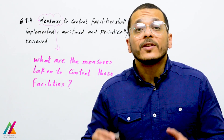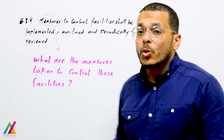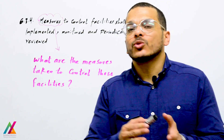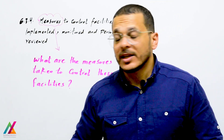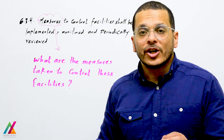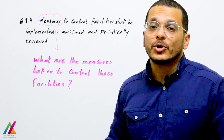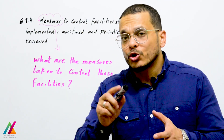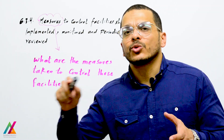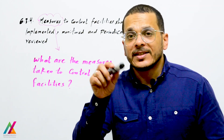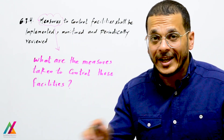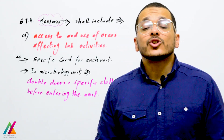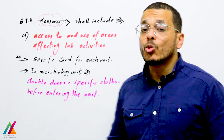This leads to an important point: what measures are taken to control facilities and prevent contamination or interference with lab activities? Measures to control facilities shall be implemented, monitored, and periodically reviewed. Once you determine measures to prevent contamination or interference, they shall be implemented quickly, monitored, and periodically reviewed. These measures shall include control of access to and use of areas affecting lab activities.